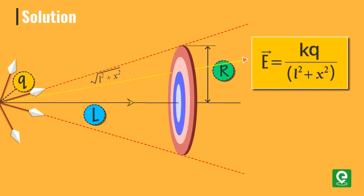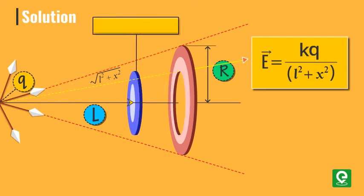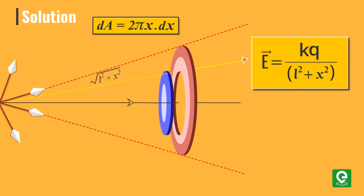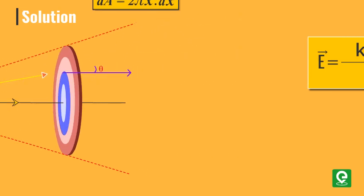Hence the electric field is equal to k q divided by l square plus x square, and the surface area of this element will be 2 pi x into dx. Let's assume that the angle between electric field and surface area is theta.